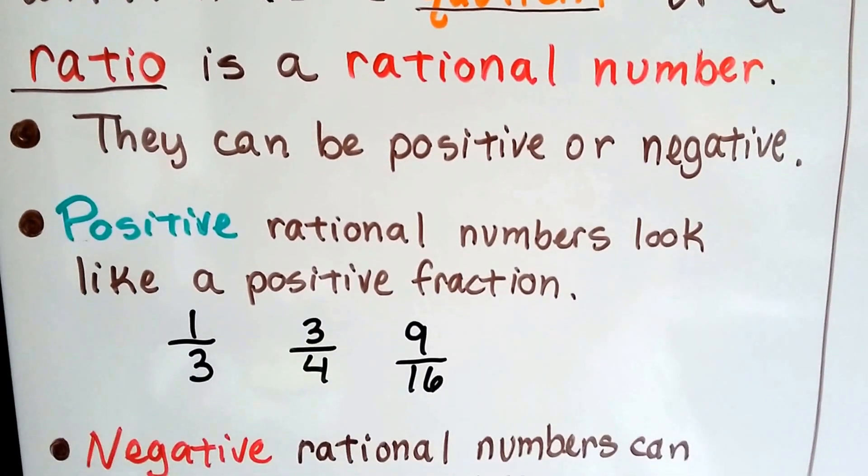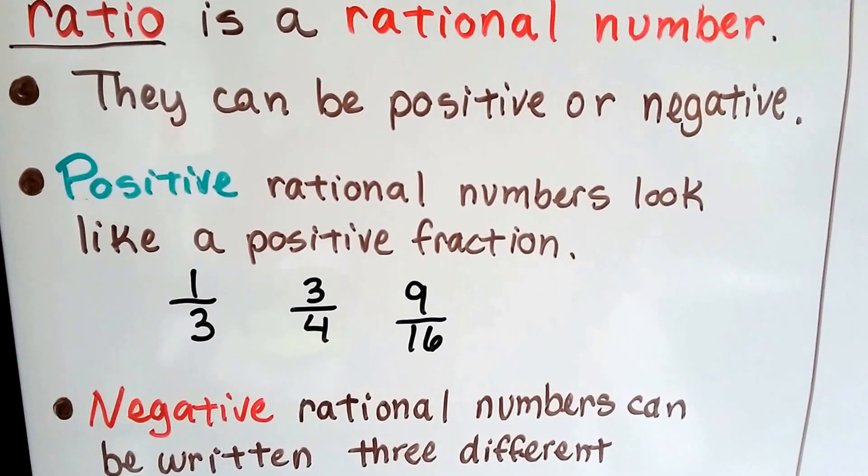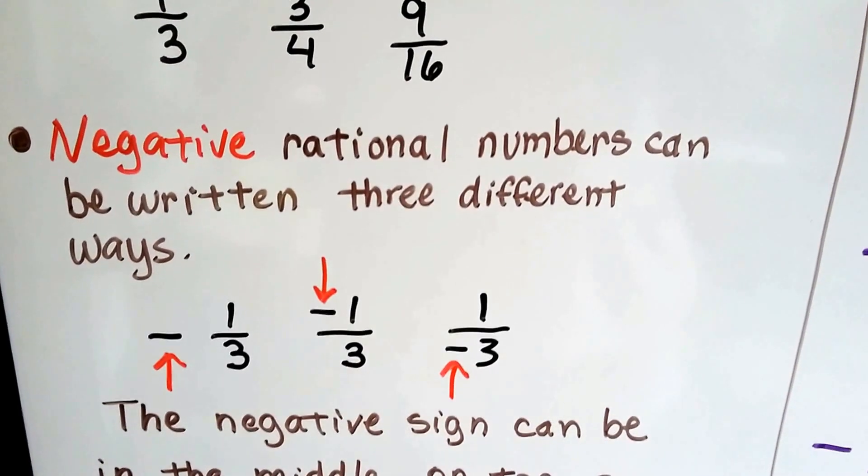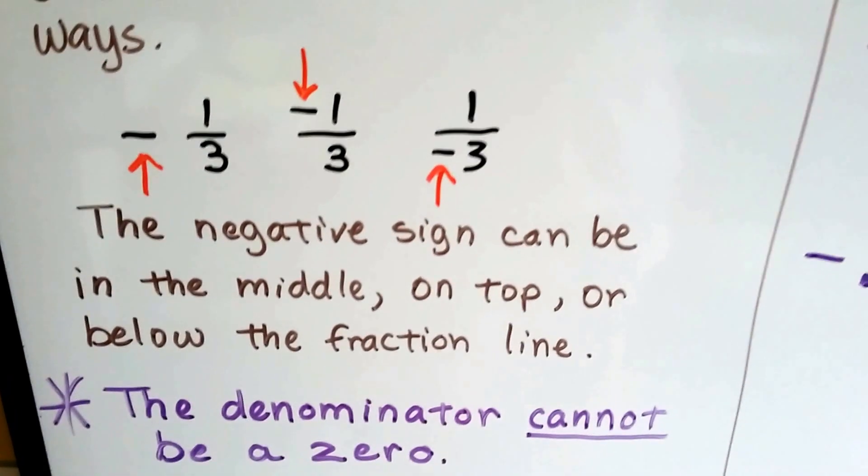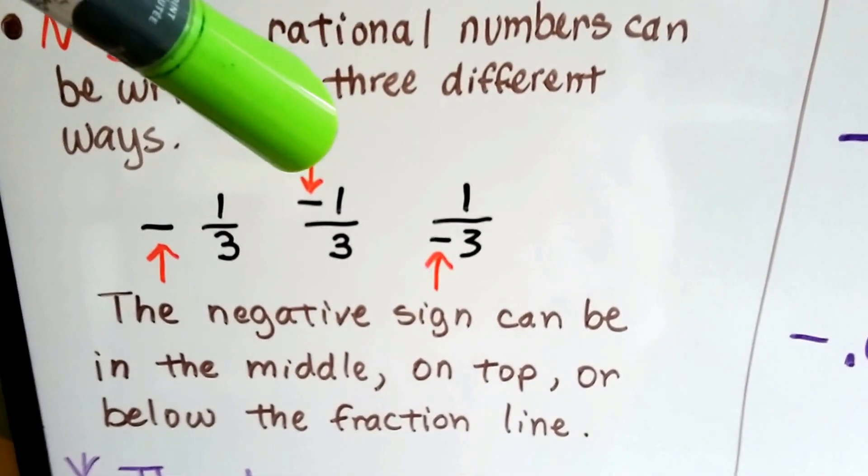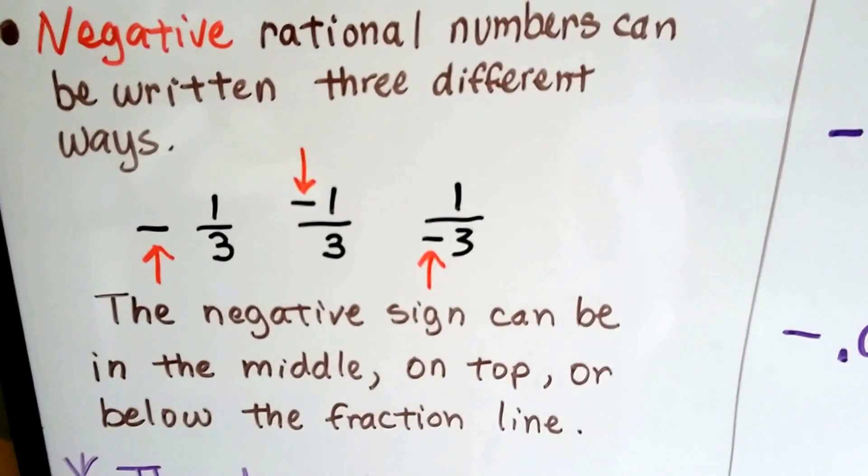They can be positive or negative, and positive rational numbers look like a positive fraction, like just a regular simple fraction. A negative rational number can be written three different ways. We can put the negative sign in the middle, in the front of it, like this. We can put the negative sign on top with the numerator, or the negative sign can be with the denominator down below, see?